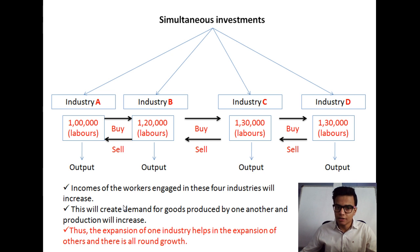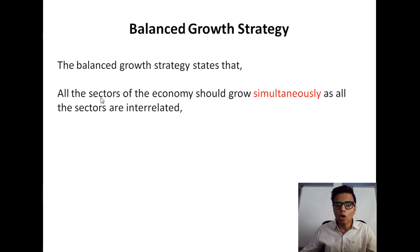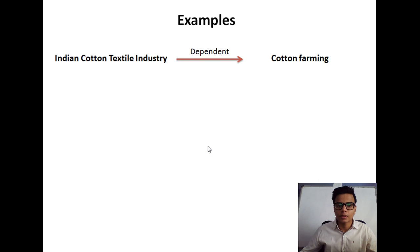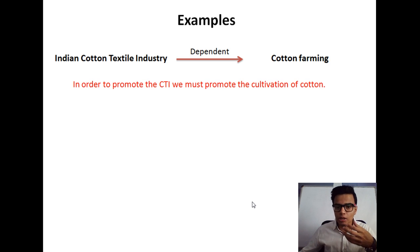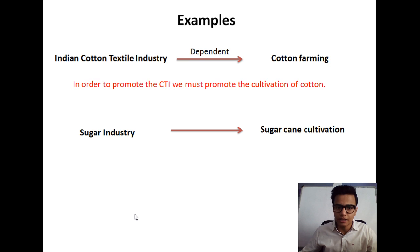The concept is really good and it seems logical as well. This strategy states that all the sectors of the economy should grow simultaneously because all are interrelated. For example, the Indian cotton textile industry is heavily dependent on agriculture — specifically cotton farming. If we don't cultivate cotton, the cotton textile industry cannot develop. Similarly, the sugar industry is heavily dependent on sugar cane cultivation. We can't even import sugar cane because it is a bulk item, so if you want to develop the sugar industry, we have to promote sugar cane cultivation.